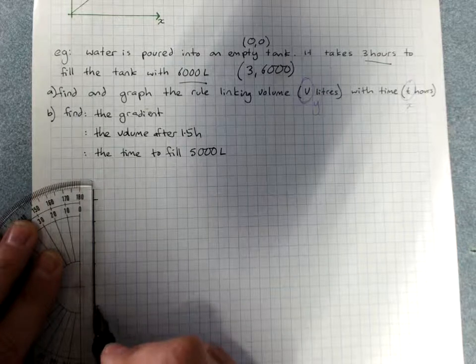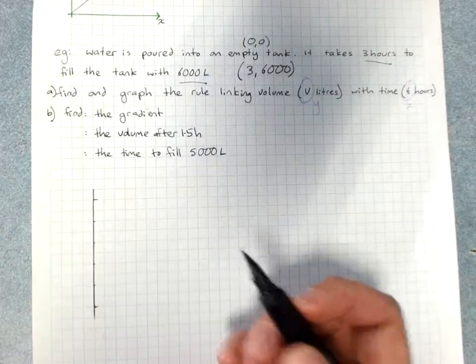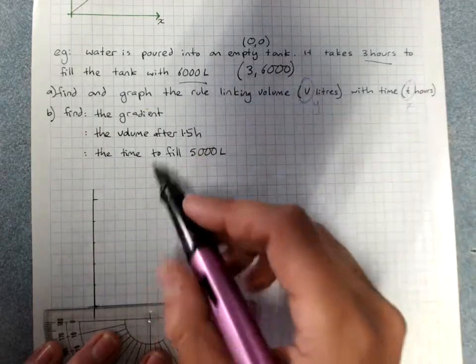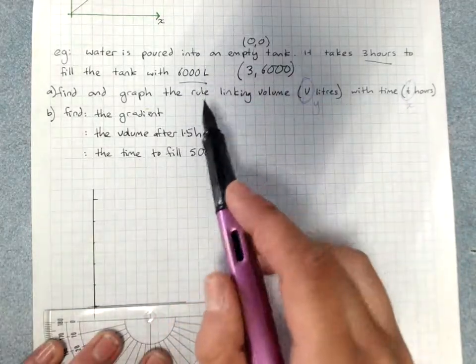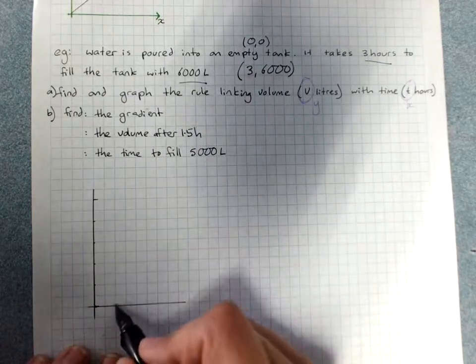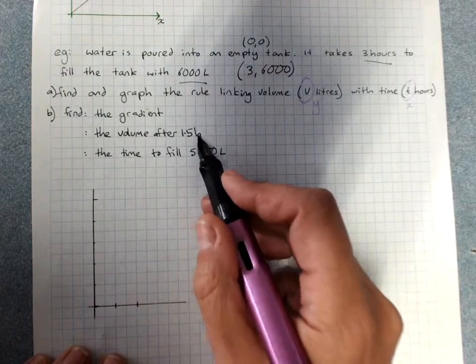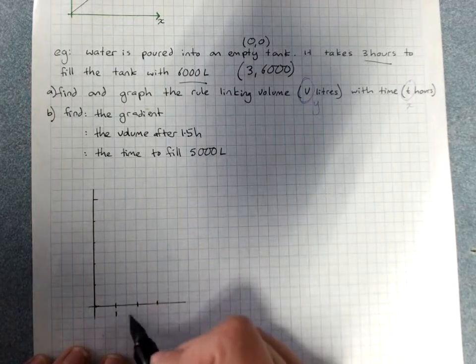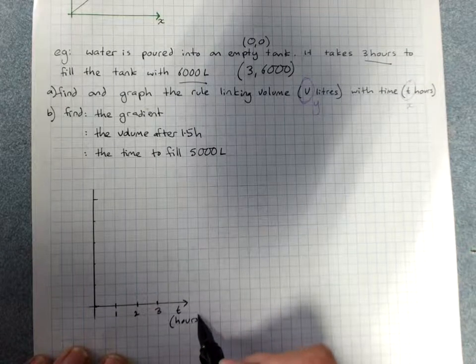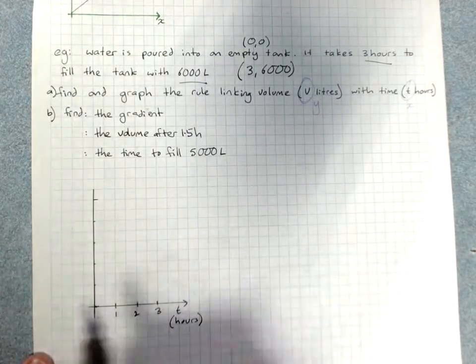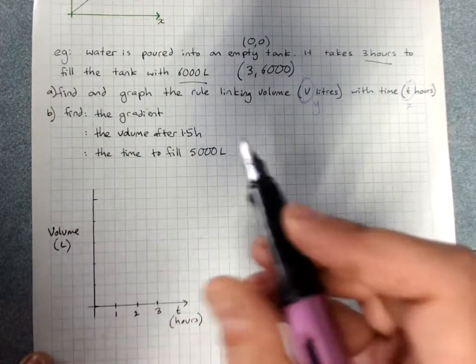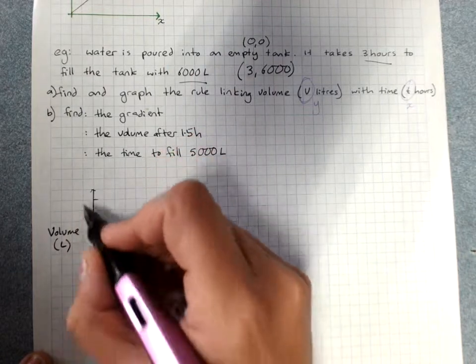Need a little bit more space there. So we only need to go up to three hours because that's all they've asked us for. We read through the questions. Just check that you don't need to show anything way outside those values. But we only need to go to 1.5 hours or 5,000 liters. So we put T in hours, you do need to label your graph. We put volume in liters, which is V.